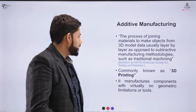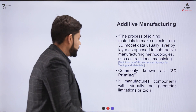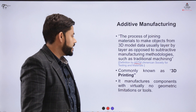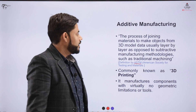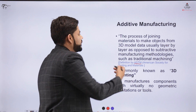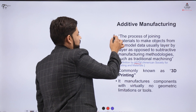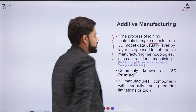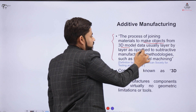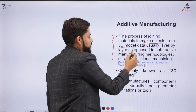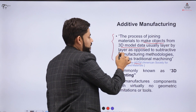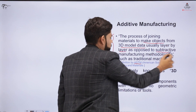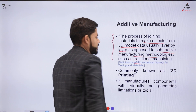Additive manufacturing, as per the definition from ASTM — the American Society for Testing and Materials — is the process of joining material to make objects from 3D model data. It is done usually layer by layer, which is the opposite of subtractive manufacturing methodologies.